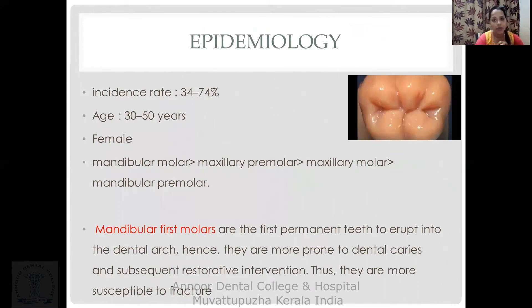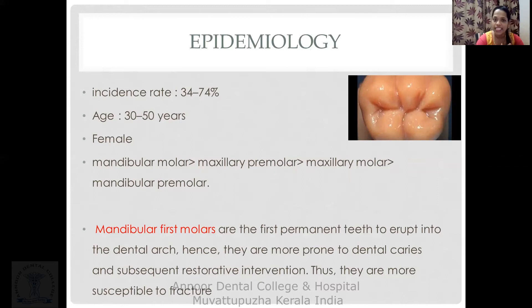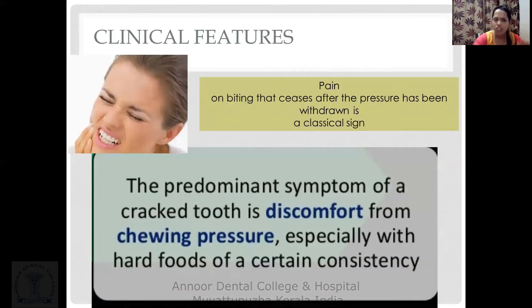Epidemiologically, the incidence of crack tooth syndrome ranges from 34 to 74%. It generally affects individuals aged 30 to 50 years. The mandibular first molar is most commonly affected, followed by the maxillary premolar, maxillary molar, and mandibular premolar — because mandibular first molars are among the first permanent teeth to erupt and are more prone to caries and trauma.